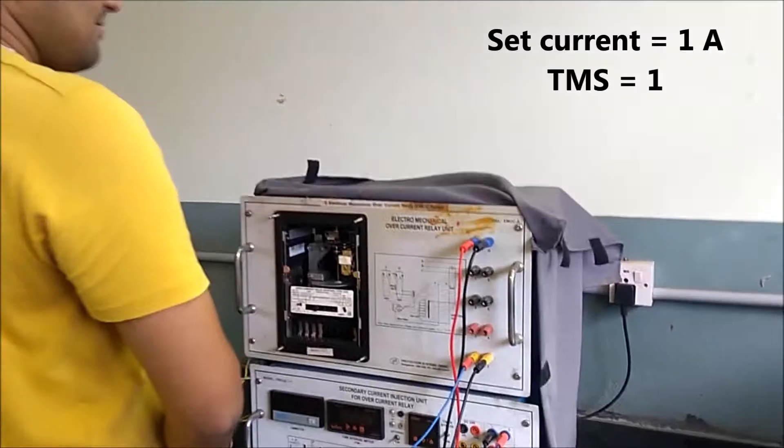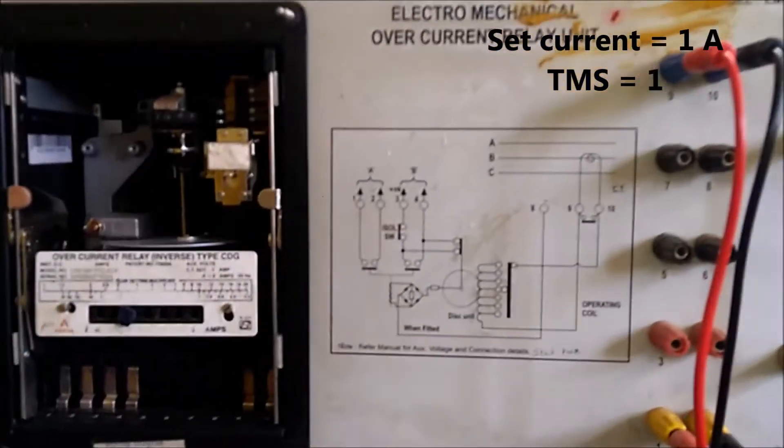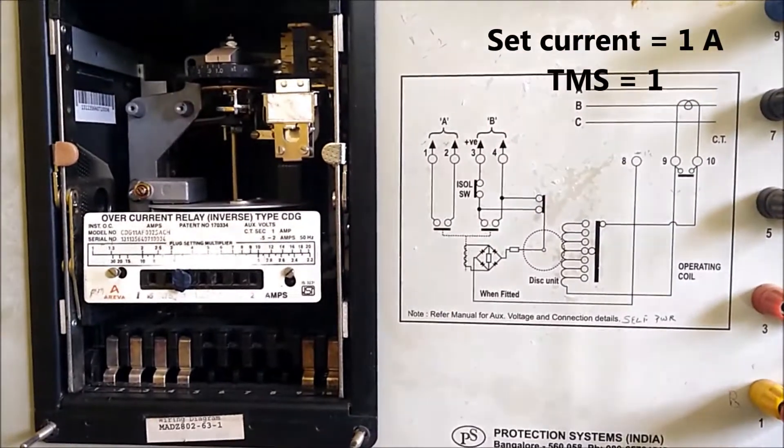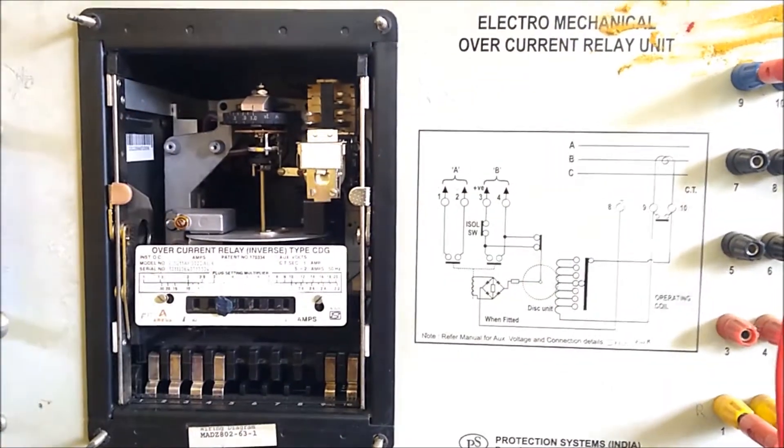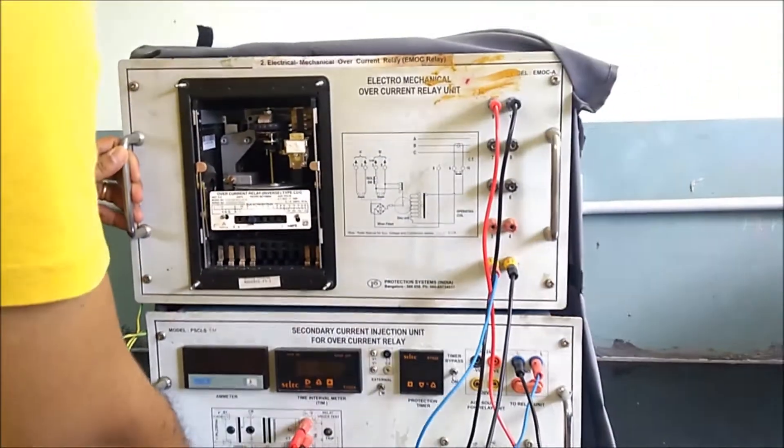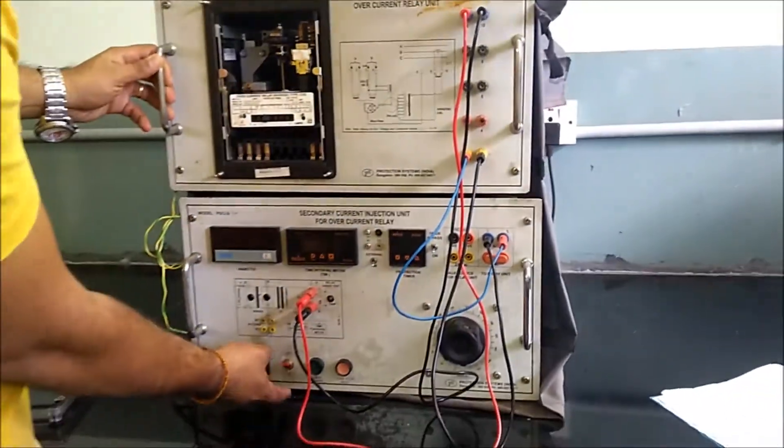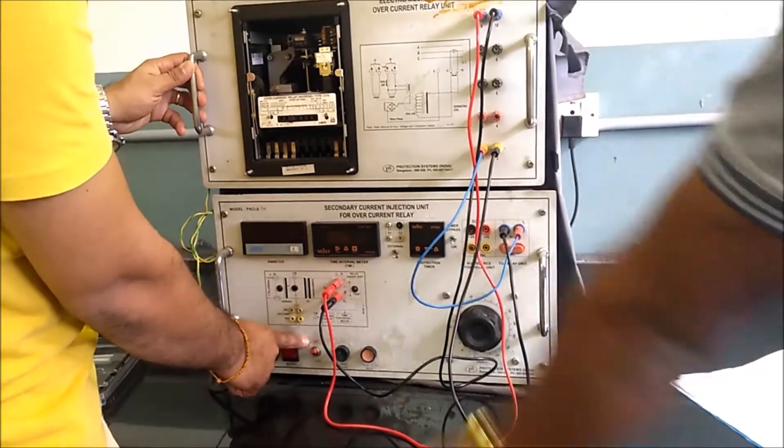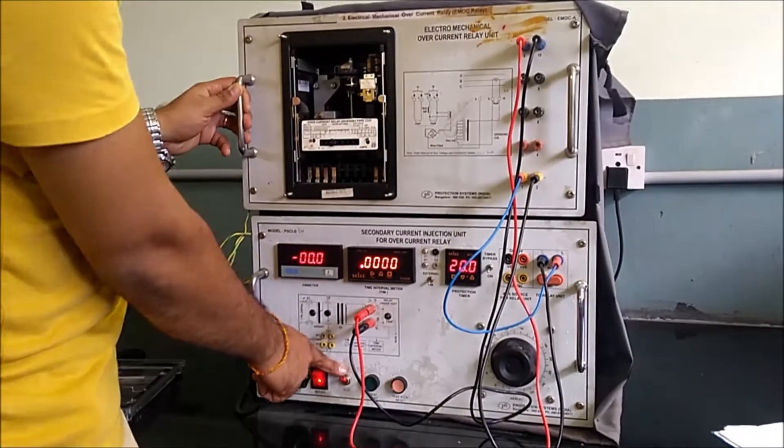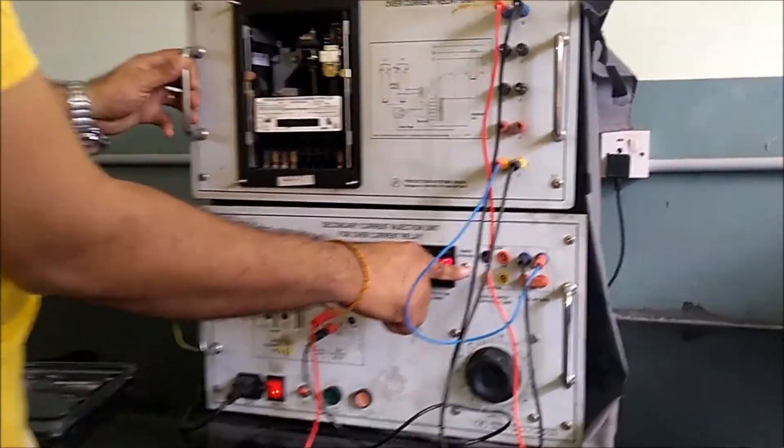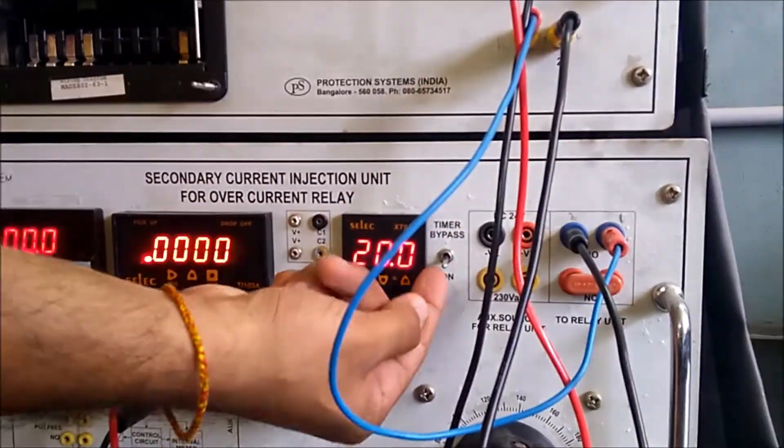Now we have set the current as 1 amp, that is plug setting, and time multiplier setting knob we have kept it to 1.0 which means 1. First we keep the control module in the set position, we switch on the supply. Set position is used to keep the set current and then we test it.